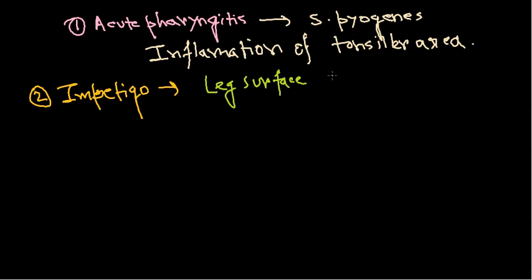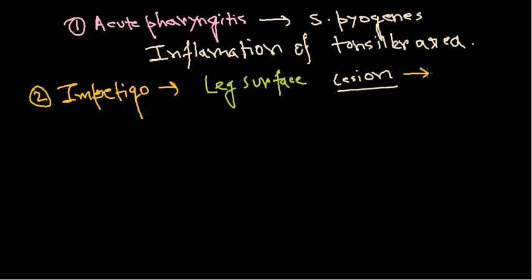Impetigo essentially causes ulceration where a large number of Streptococcus species are present. It can be treated with a topical agent such as mupirocin. However, this is still a dangerous situation because eventually these ulcerations can convert into necrosis of tissue, making impetigo a serious condition.